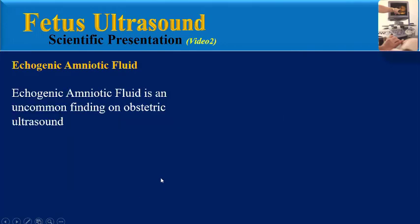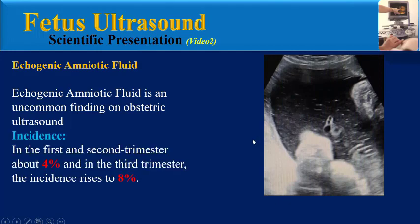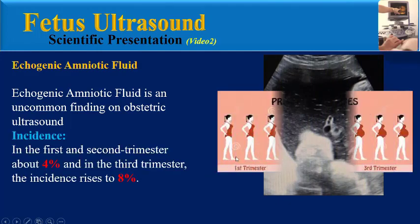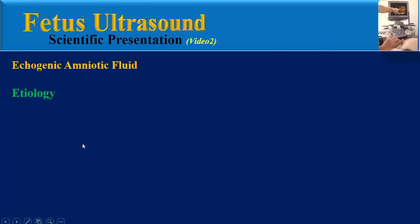Echogenic amniotic fluid is an uncommon finding on obstetric ultrasound. Incidence in the first and second trimester is about 4%, and in the third trimester the incidence rises to 8%. What is the etiology of echogenic amniotic fluid?